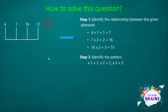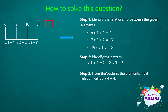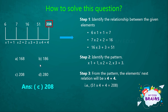So let's check whether it is right or wrong. 6 × 1 + 1 gives 7. Again, 7 × 2 + 2 gives 16. 16 × 3 + 3 gives 51. From this pattern, the next relation will be ×4 + 4. That is, 51 × 4 + 4 = 208. So the missing element here is 208. From the options, our answer will be option C, 208.